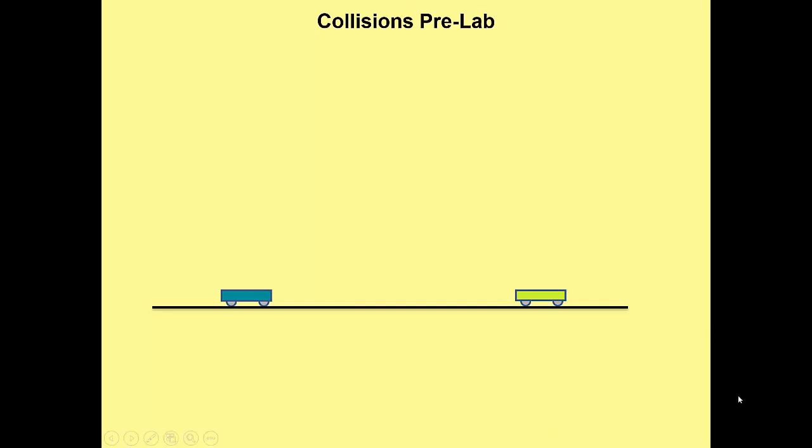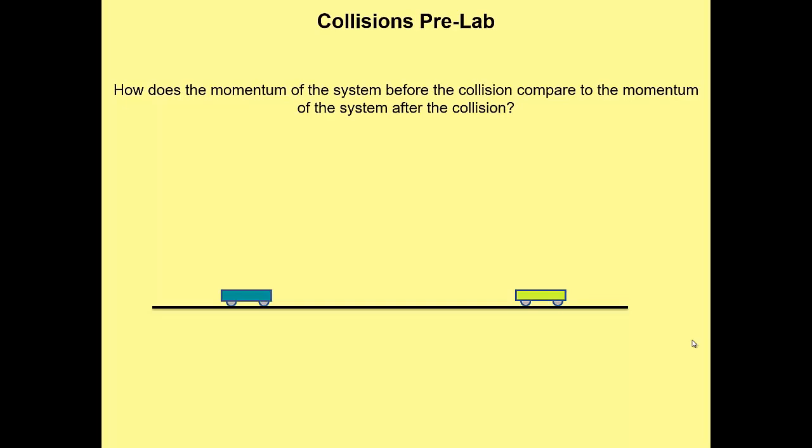During which we are going to collide carts together, at least virtually, using a nice pivot. And we are going to measure momentas before and after the collisions and compare them to one another. So our question, again, we are trying to answer is, how does the momentum of the system before the collision compare to the momentum of the system after the collision?